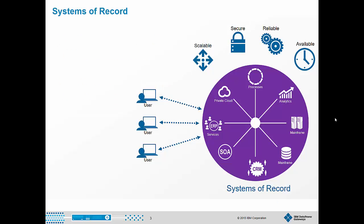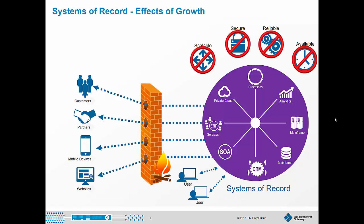For the past 30 years or so, we've spent a lot of time perfecting our systems of record and creating ways of accessing them. Our systems of record have been built out to be very secure, very reliable, very available, and very scalable. Historically, this has worked really well for us. The problem is that when we have to build something to accommodate new engagements or support a new channel such as mobile, or add a new B2B trading partner or analytics channel, we have to build everything end-to-end. Security is compromised, our systems become fragile, and often unreliable.